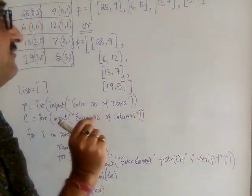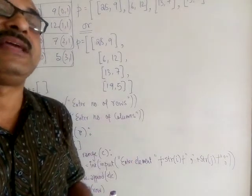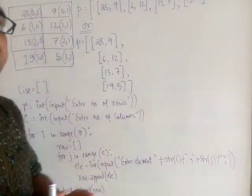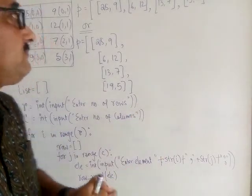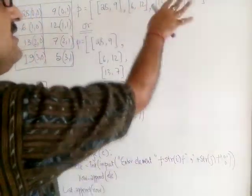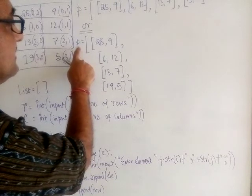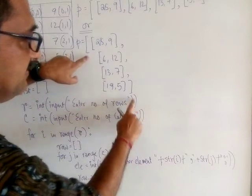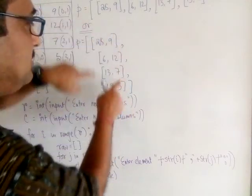Whenever you solve any complicated problem involving a double dimension array, it is very helpful to write down the location of every element in rough — that makes access and understanding much clearer. To represent this, we can write it directly, or in Python we can write it like this: `p = [[...]]` — a nested list where the outer bracket is for the main list and the inner brackets are for the smaller lists inside.